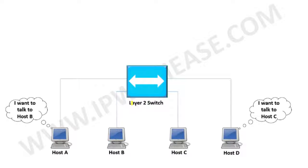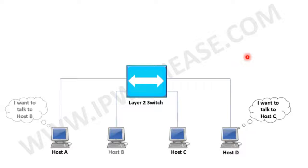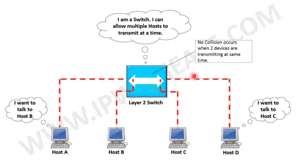Keeping the setup the same, we now replace the hub with a layer 2 switch. Let's see how the switch handles the situation of two or more devices transmitting at the same time. Host A wants to talk to host B and host D wants to talk to host C. Host A and D transmit at the same time — and the switch allows multiple hosts to transmit simultaneously, so no collisions occur.